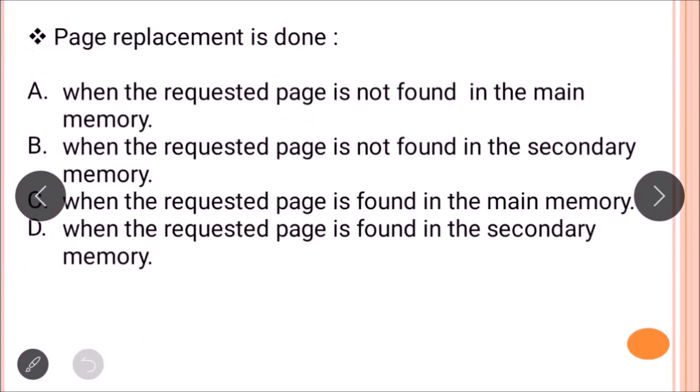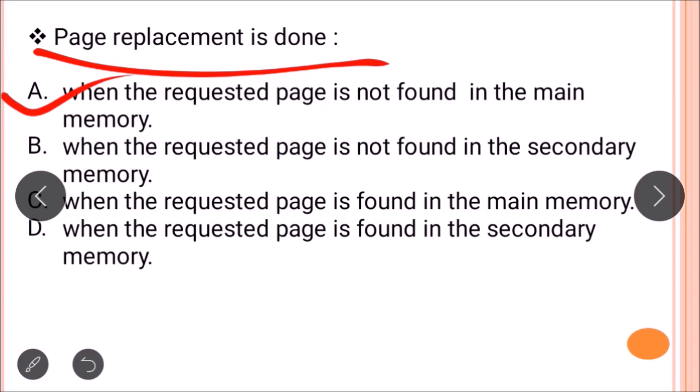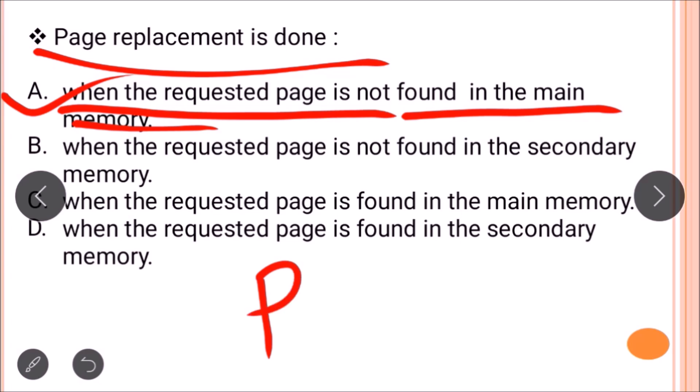The next question is: page replacement is done when? Options: (A) when the requested page is not found in main memory, (B) when not found in secondary memory, (C) when found in main memory, (D) when found in secondary memory. The correct answer is option A. When a page is not found in main memory, it is called a page fault. That page is then brought from secondary memory into main memory, and if main memory has no free space, page replacement must be performed.